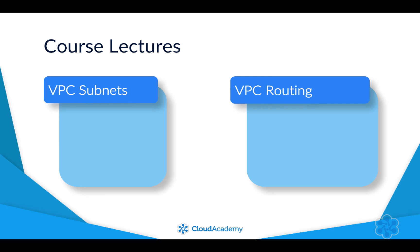Throughout this course, I shall be focusing on VPC subnets and routing and breaking each of these components down into the following lectures. Starting with VPC CIDR Blocks — this lecture focuses on the effect of subnetting your VPC CIDR Block. Then I'll look at why you should subnet your VPC, covering the advantages and benefits. Then we'll look at VPC subnets, diving into what a VPC subnet looks like within the management console and its associated components such as network access control lists.